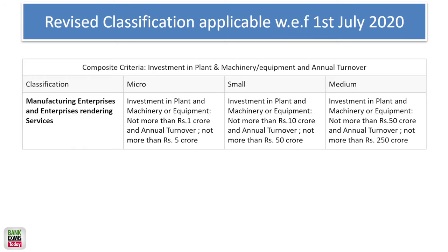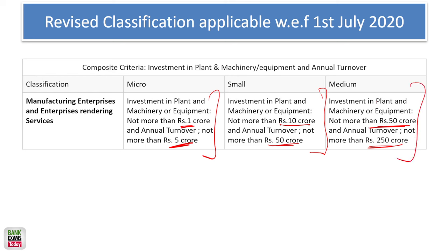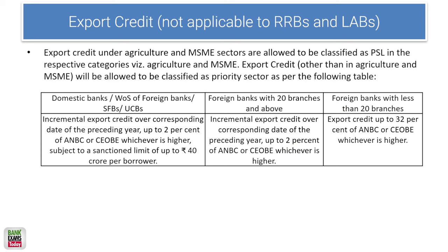Revised classification of MSMEs: if investment in plant and machinery is up to 1 crore and annual turnover is up to 5 crore, it is a micro enterprise. If investment is up to 10 crore and annual turnover is up to 50 crore, it is a small enterprise. If investment is up to 50 crore and annual turnover does not exceed 250 crore, it is a medium enterprise. This has been asked in previous papers.